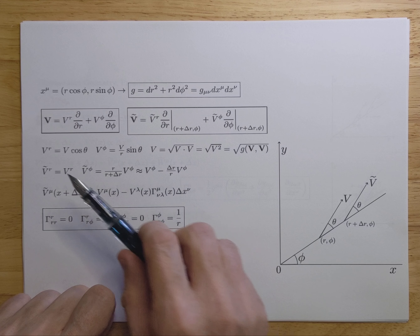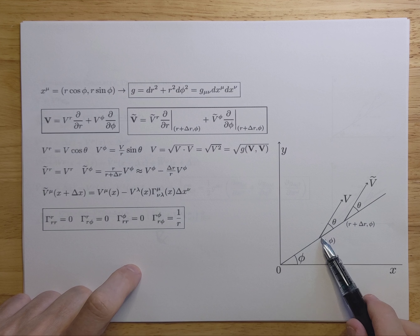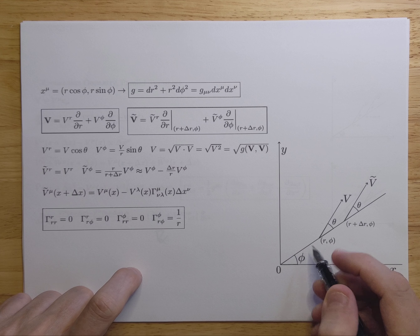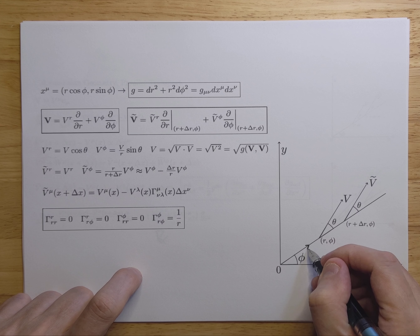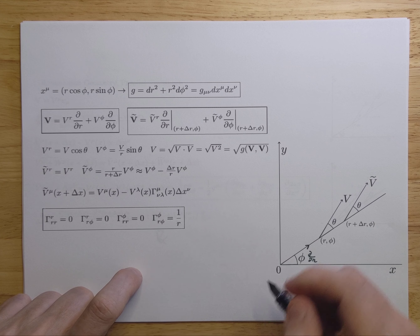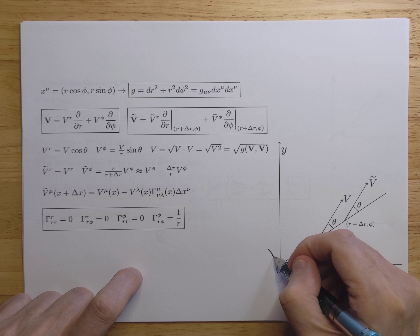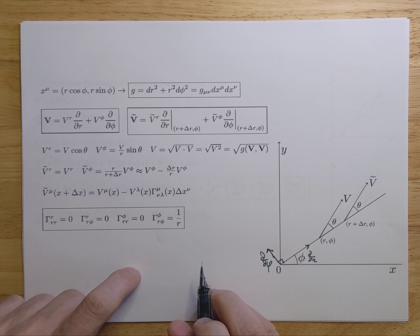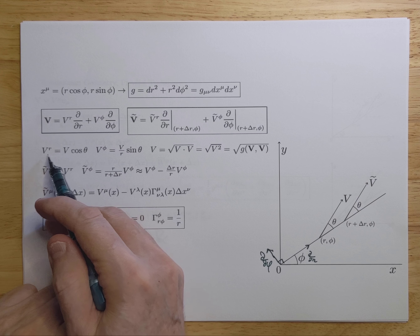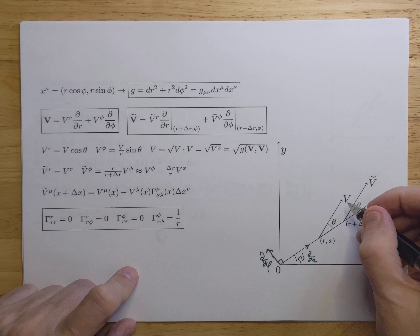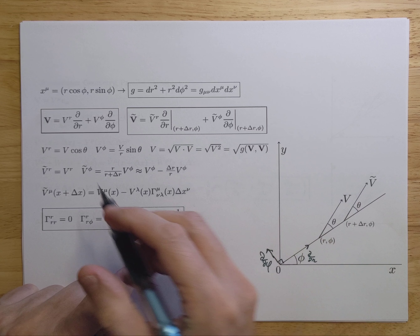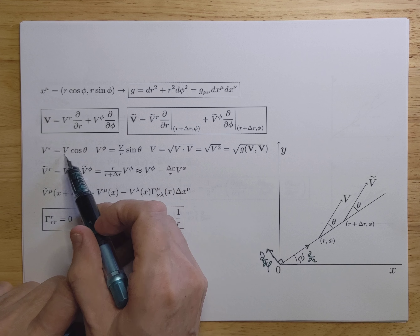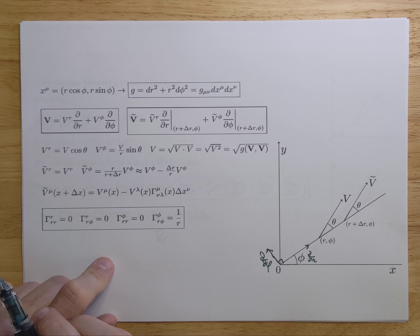Let's calculate what the components are for this vector. In the direction of R, ∂/∂R is in one direction, and perpendicular to it you have ∂/∂φ. We're going to calculate what V^R is — it's just the projection of this vector V onto the ∂/∂R direction, which is V cos θ. And because |∂/∂R|² equals 1, we're already fine there.